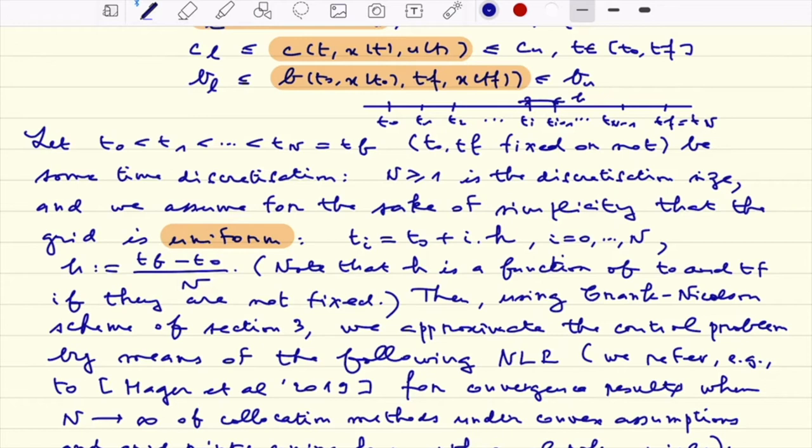One obvious remark: if t0 or tf are free, actually F will be a function of t0 or tf. We will, for instance, do the Runge-Kutta scheme, but the same will be done using the midpoint scheme.